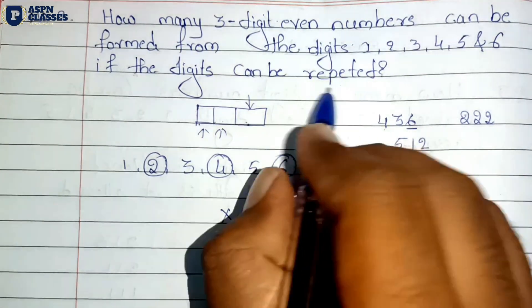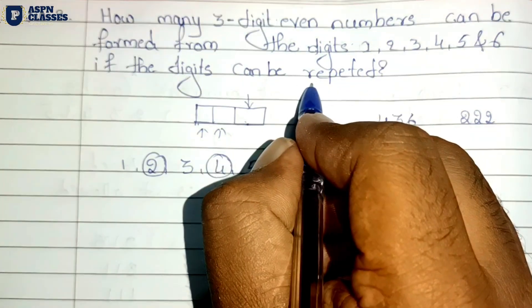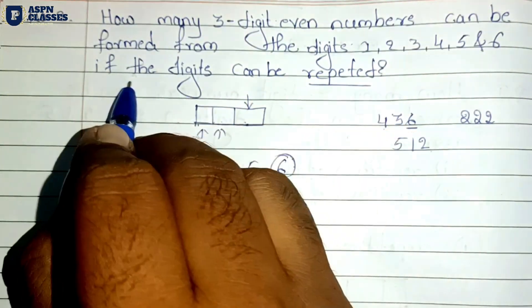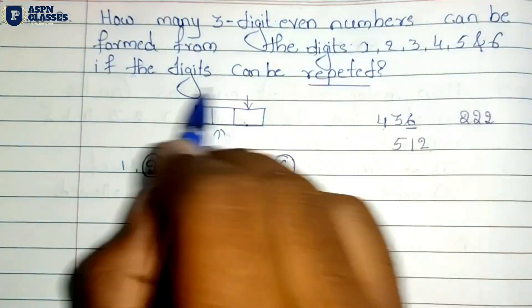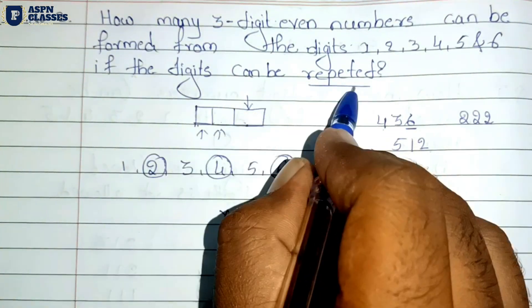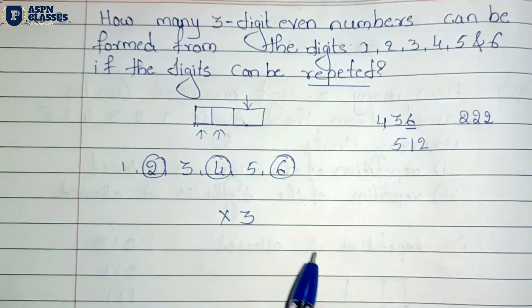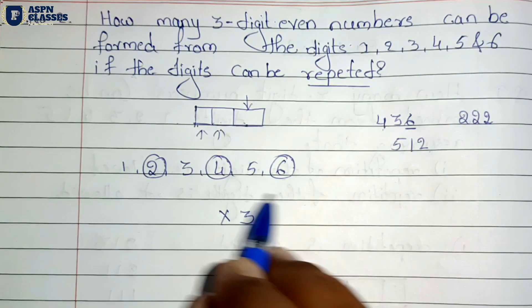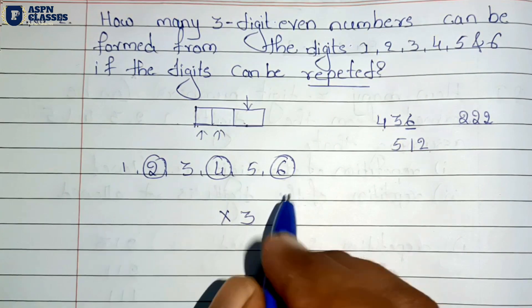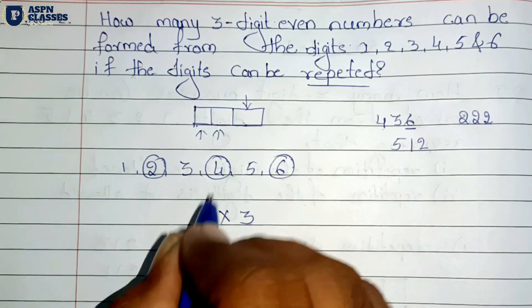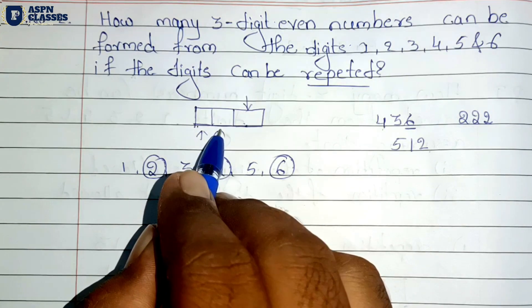The main thing is that repetition is allowed. If the digit can be repeated, the total number of digits is 6, so we can use all 6 digits in each of the remaining places.